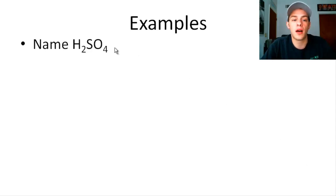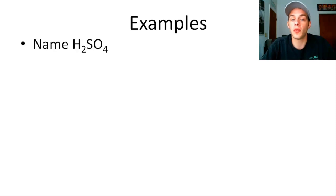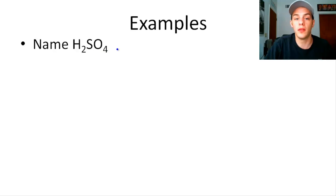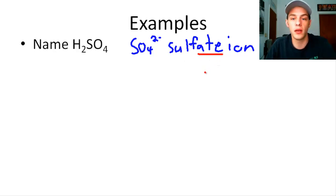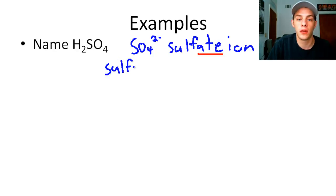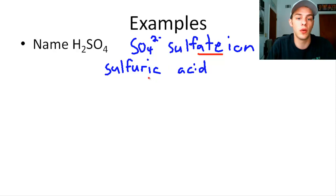Let's name H2SO4. You need to know polyatomic ions — their names, formulas, and charges. The oxyanion here is the sulfate ion, SO4 2-. Since our oxyanion ends in -ate, we use the suffix -ic. So this compound is called sulfuric acid.